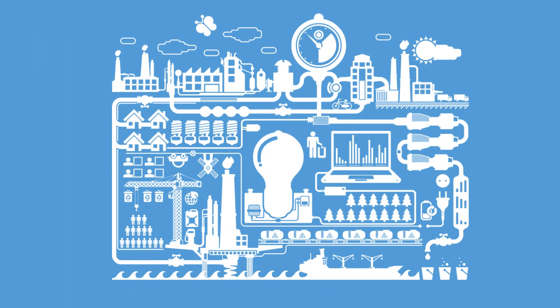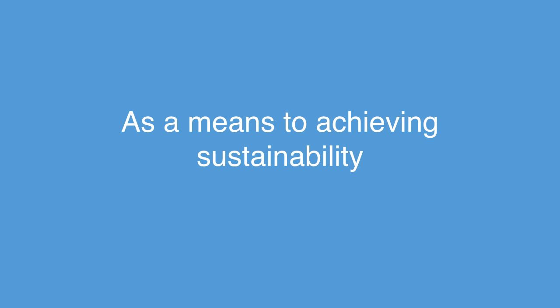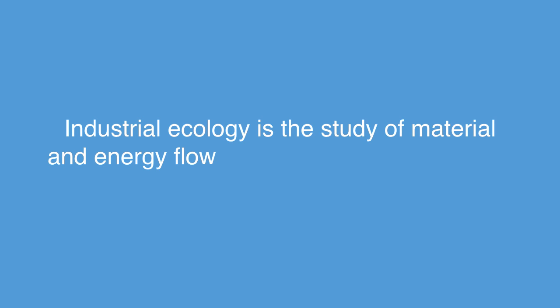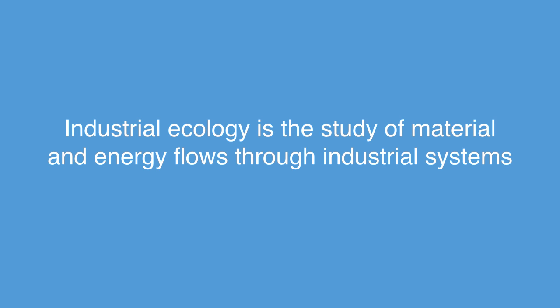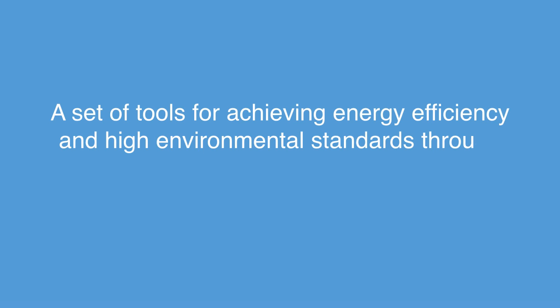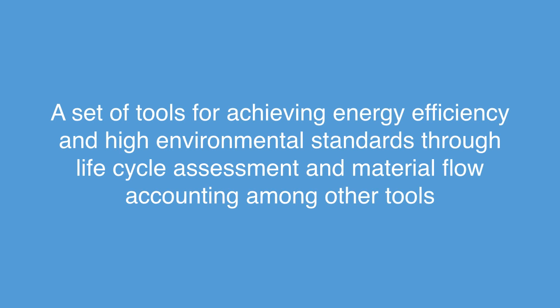Industrial ecology as a subject is both interdisciplinary and holistic, thus it is a very broad area giving it a number of different interpretations. The most expansive definitions interpret it in a generalized sense as a means to achieving sustainability. A more common definition would read: industrial ecology is the study of material and energy flows through industrial systems. On its most practical level it may be understood as a set of tools for achieving energy efficiency and high environmental standards through life cycle assessment and material flow accounting, among other tools commonly used in the field.